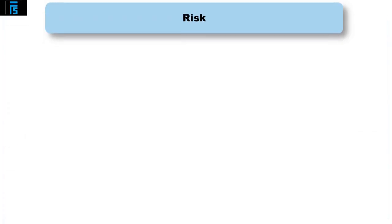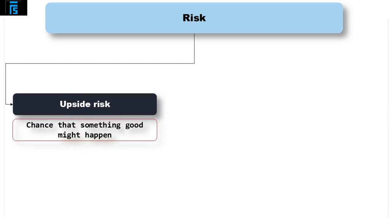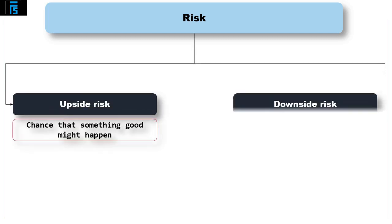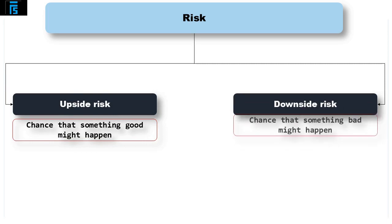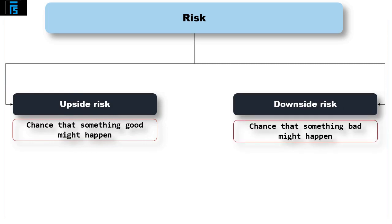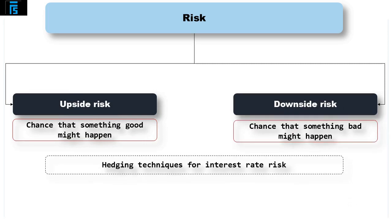Strictly speaking, risk can be upside or downside. Upside risk is the chance that something good might happen, as opposed to downside risk, which is the chance that something bad might happen. That said, the word risk often has a negative connotation associated with it, so it's often taken to mean the negative or downside.